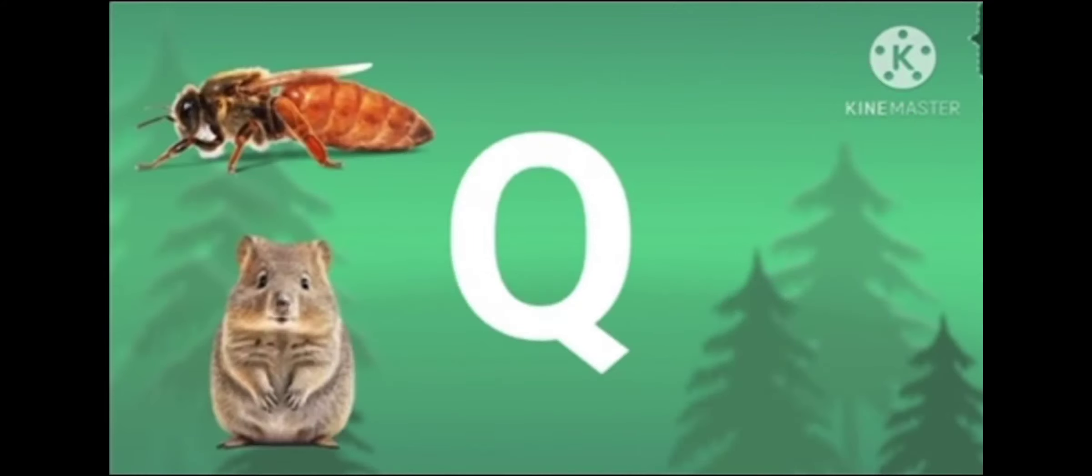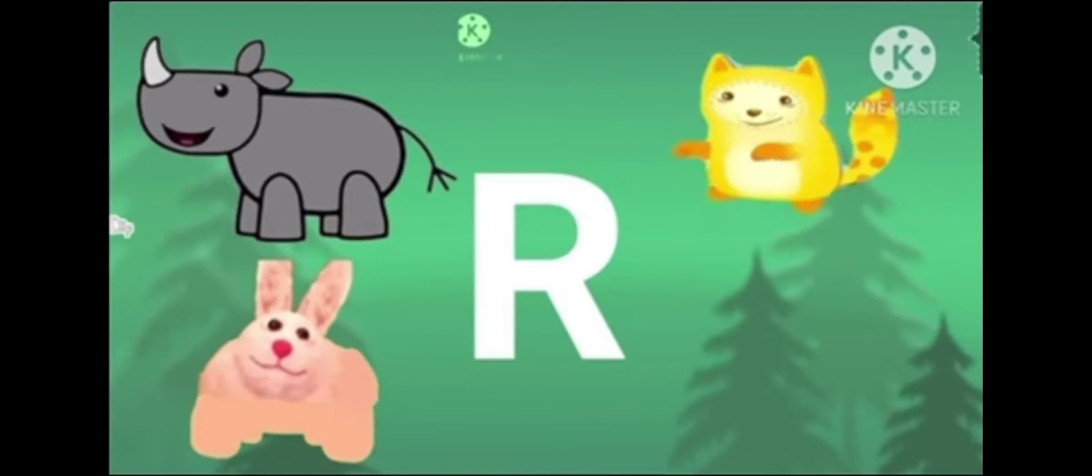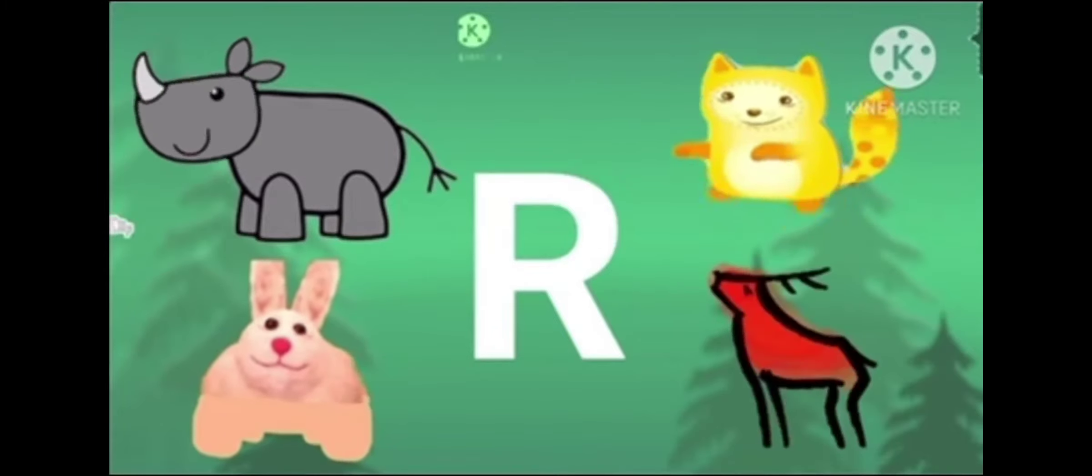Q is for queen bee, quokka and quail. Q is for quetzal, a tropical bird. R is for rhinoceros, rabbit and raccoon. R is for reindeer, pulling Santa's sleigh.